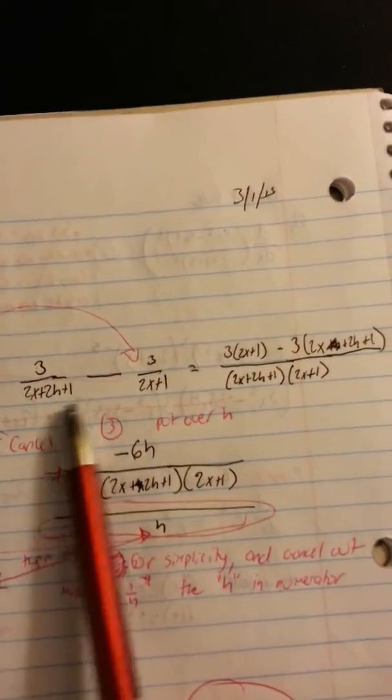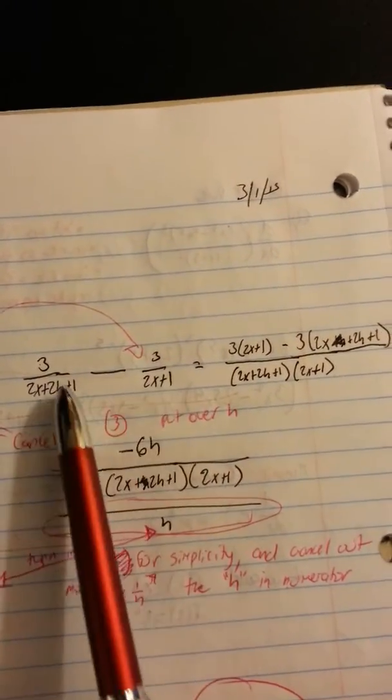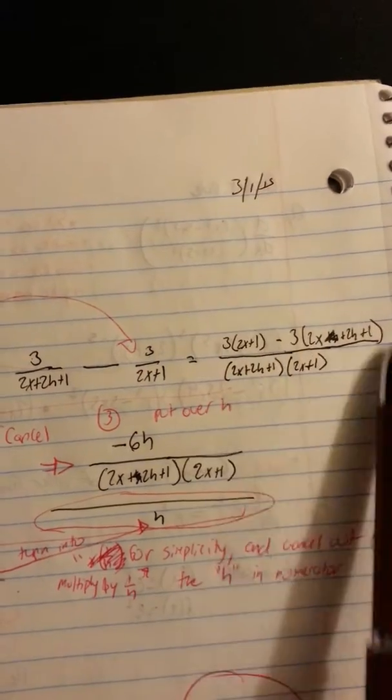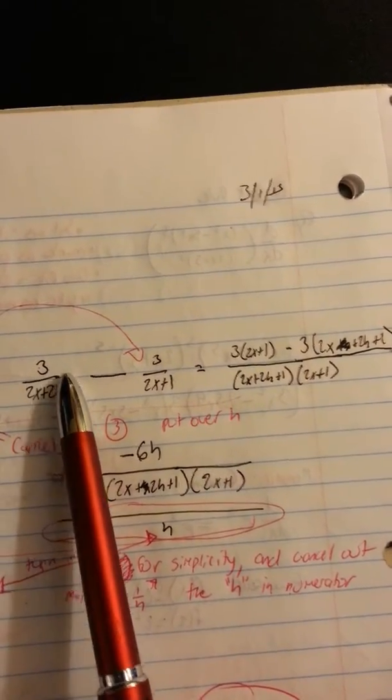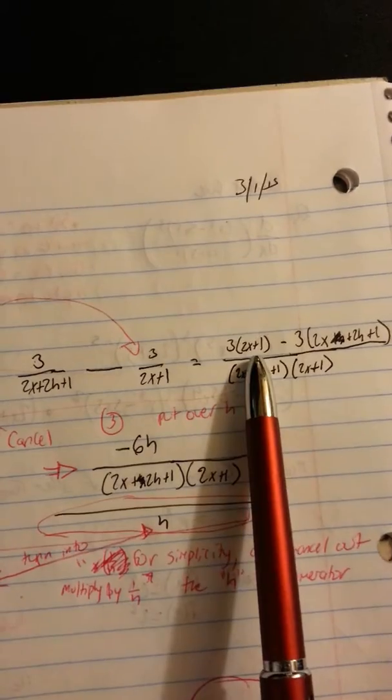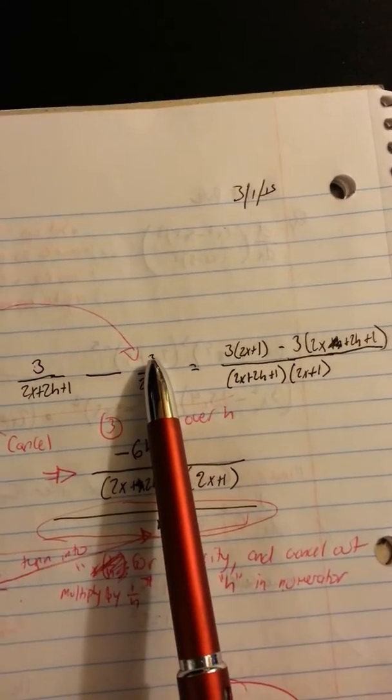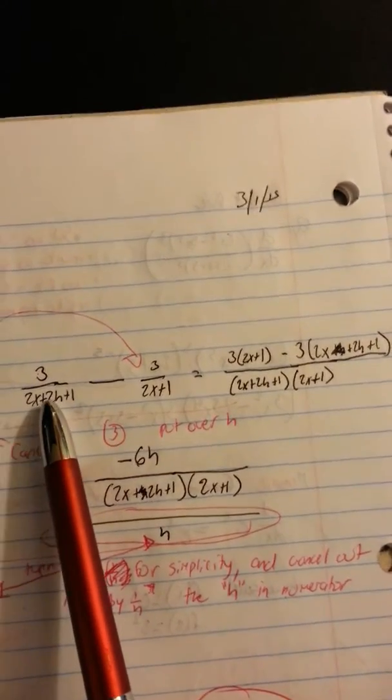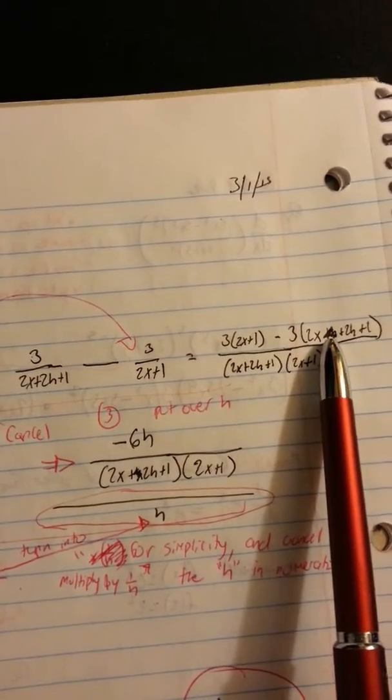So let's take a look, 3 over 2x plus 2h plus 1 minus 3 over 2x plus 1, which again is the original problem that you were given. And what this equals is this fraction over here. What you're going to do is leave the bottom untouched. You're going to multiply, and how do I get this? You're going to do it this way. 3 times 2x plus 1, which is right there.